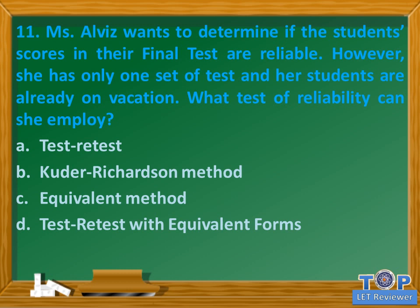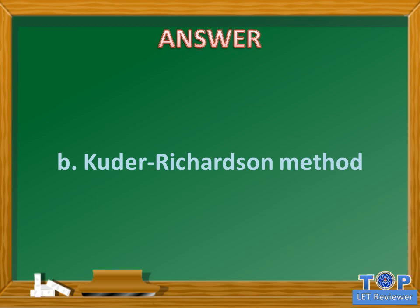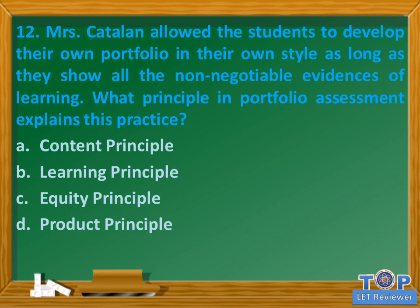Question number eleven: Ms. Alves wants to determine if the students' scores in their final test are reliable; however, she has only one set of test and her students are already on vacation. What test of reliability can she employ? A. Test-retest, B. Kuder-Richardson method, C. Equivalent method, D. Test-retest with equivalent forms. Answer: B. Kuder-Richardson method.